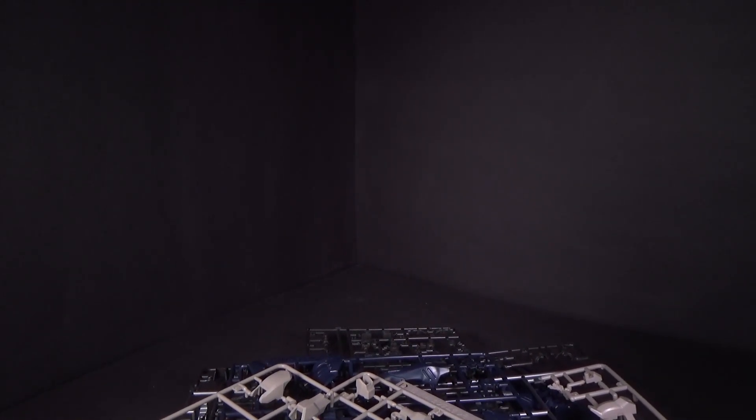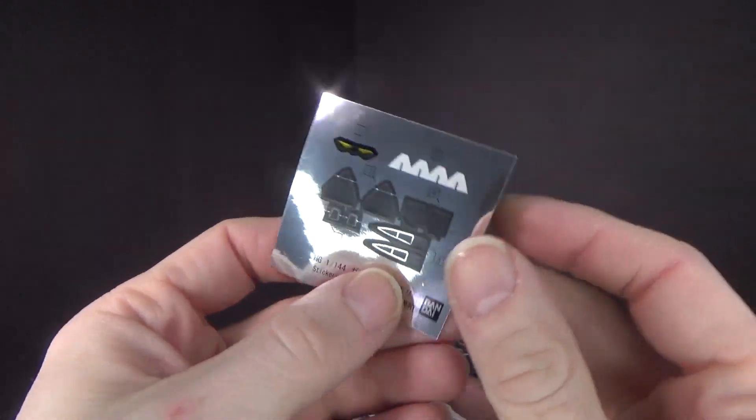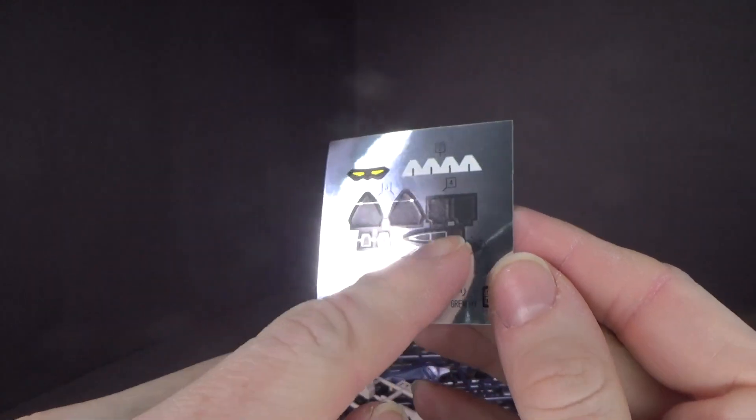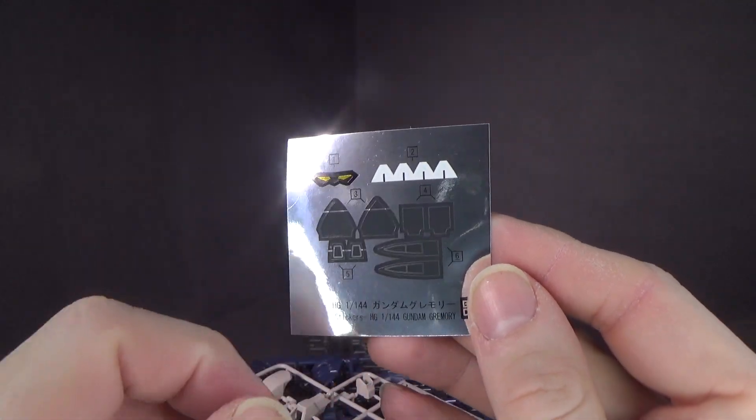And sticker sheet, it's a small sticker sheet, there are a lot of little ones. I think they're mostly detailing usually, but they have the silver on them.